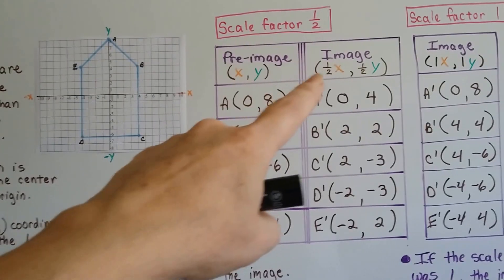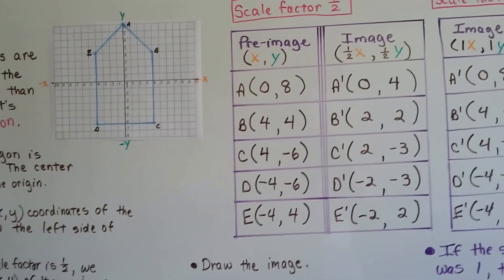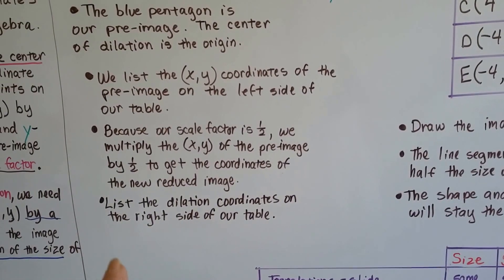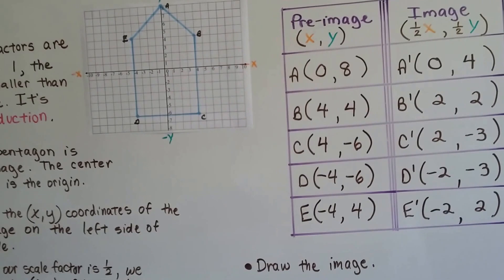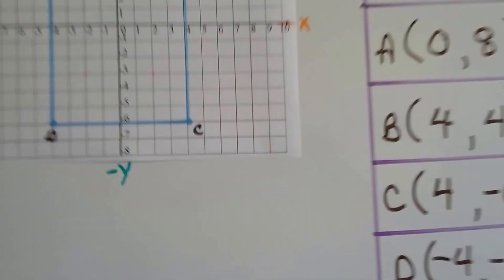x values get multiplied by a half, and y values get multiplied by a half. Then we have the new coordinates for our reduced image. We list the dilation coordinates on the right side of our table, right here. And we can plot them. We can draw the image. So that's what we're going to do right now. I'm going to do this one with you.